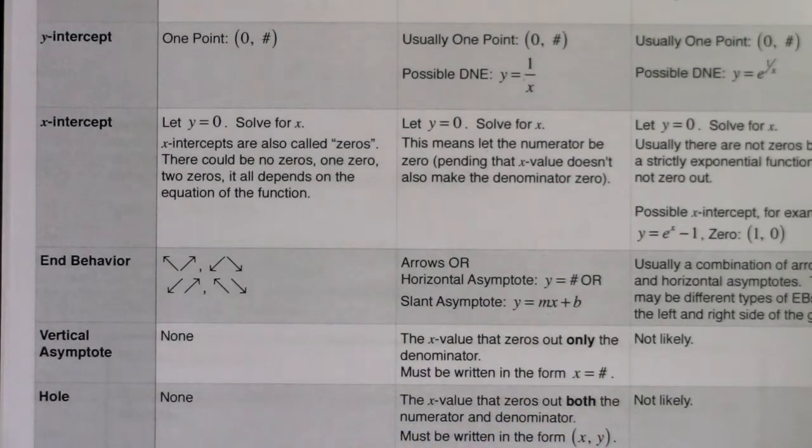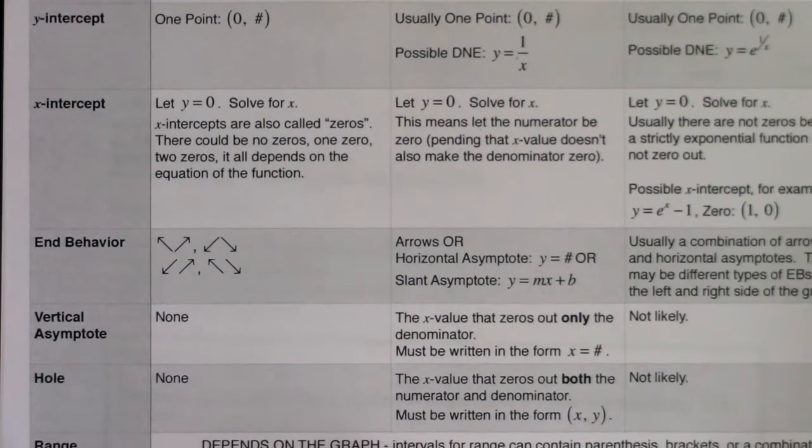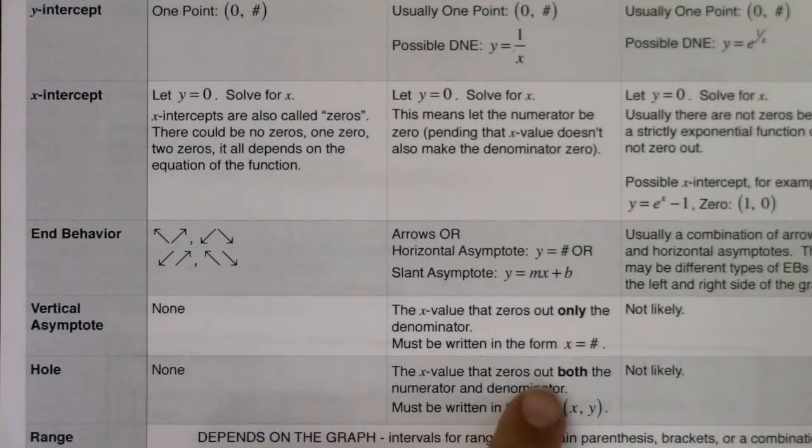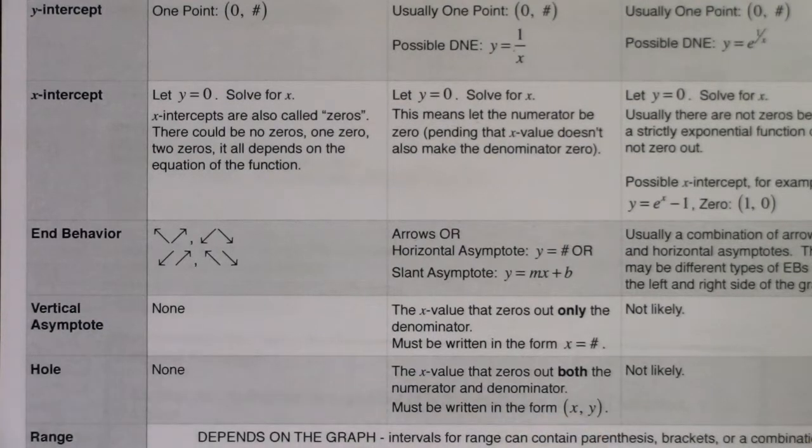If it's not in the form x equals a number, I'm going to dock you. For holes, you're looking for where you have a common factor in your numerator and denominator, or x values that zero out both your numerator and denominator. Make sure you know how to find that x-coordinate and that y-coordinate.